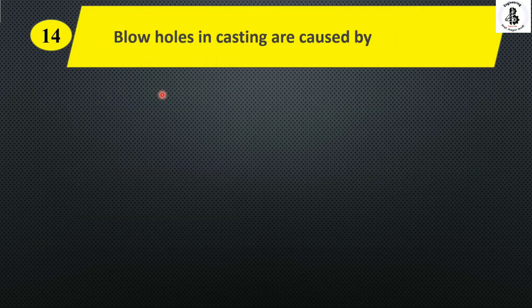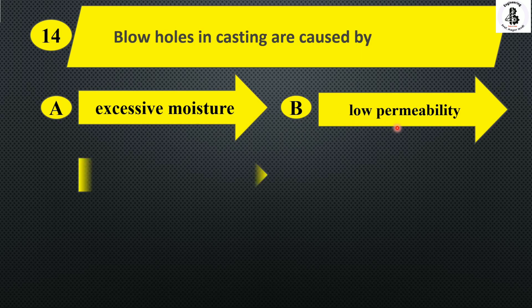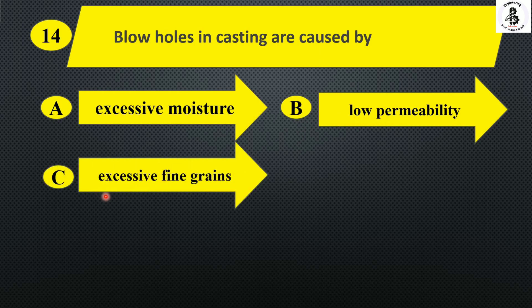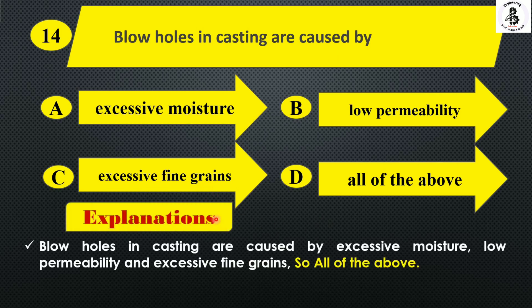Next: blow holes in castings are caused by — option A excessive moisture, option B low permeability, option C excessive fine grains, and option D all of the above. Basically, blow holes are a type of casting defect caused by excessive moisture, low permeability, as well as excessive fine grains. So the right answer is option D, all of the above.